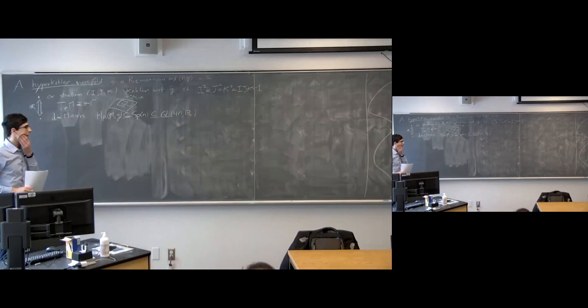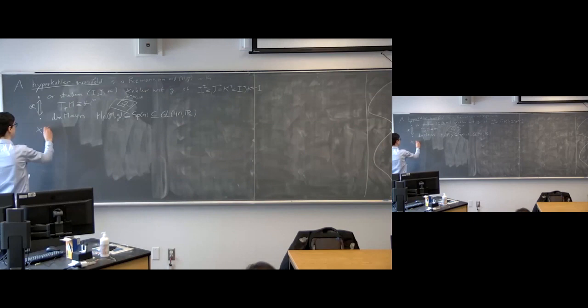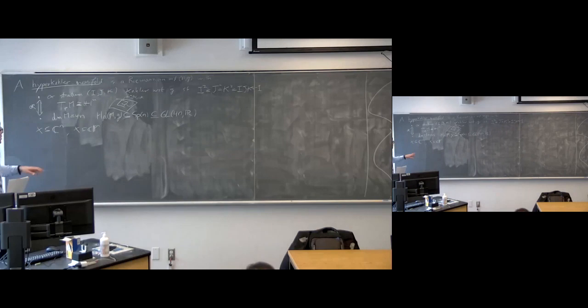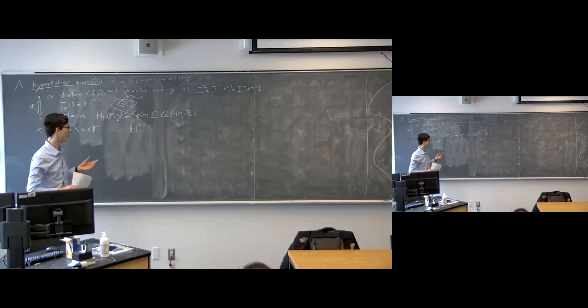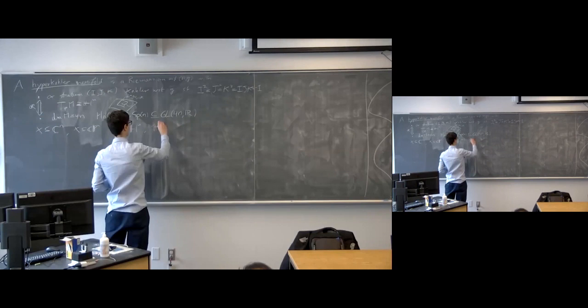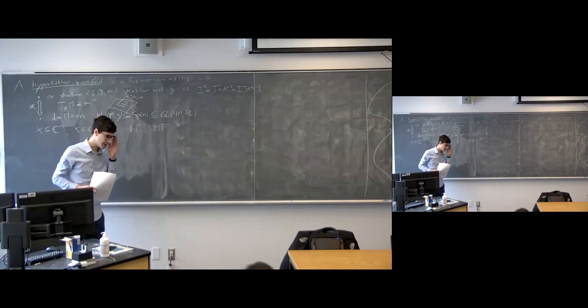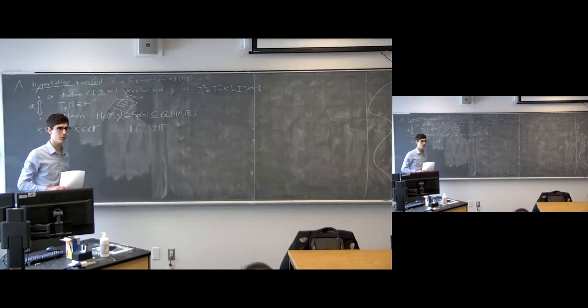In general, those are quite difficult to construct, unlike Kähler manifolds. For a Kähler manifold, any subcomplex manifold of Cⁿ or CPⁿ, for instance, is automatically Kähler. But this is in sharp contrast with hyperkähler structures, because the only hyperkähler submanifolds of Hⁿ are just linear planes, affine planes, or open subsets of them. The quaternionic projective space is not even hyperkähler itself. So we have to look elsewhere to construct hyperkähler structures.